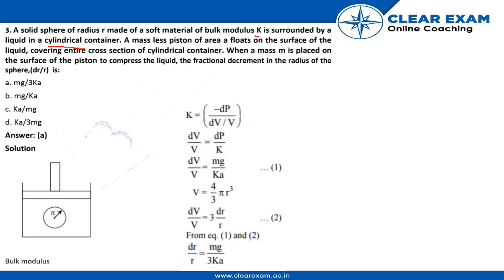So this will be a piston and mass M will be placed on it. So K equals to minus dP upon dV by V. dV by V equals to dP by K. And delta V upon V equals to mg upon KA. This will be our first equation.